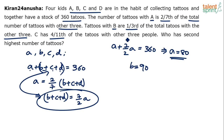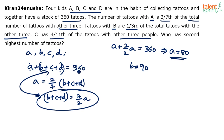Go to the next statement. C has four-eleventh of the tattoos with the other three. C is equal to 4 by 11 of A, B, D. If C is 4 by 11 of ABD, then ABD is 11 by 4 of C. Substitute that back: C plus 11 by 4 C is 15 by 4 C. 15 goes 24 times in 360, so C by 4 is 24, meaning C is equal to 24 into 4, which is 96.